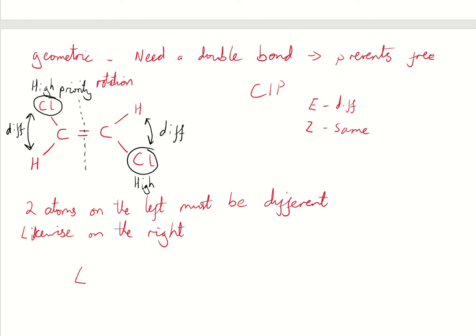Then this is the E isomer. And if I wanted to give it its full name, then E-1,2-dichloroethane there. But that's the key thing. What you'll likely just be asked in the exam is to spot whether it's the E isomer or the Z isomer. Or maybe you'll just ask to draw this if you're giving the name. Thank you.